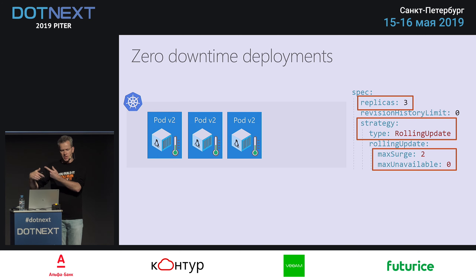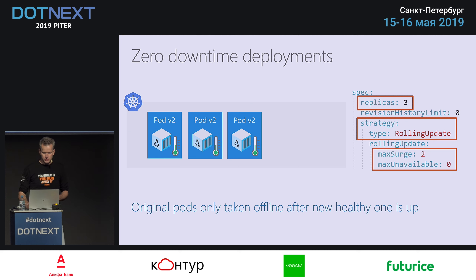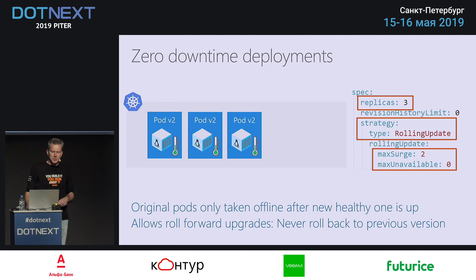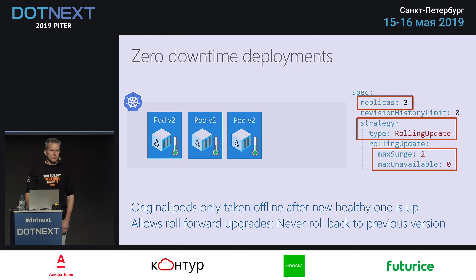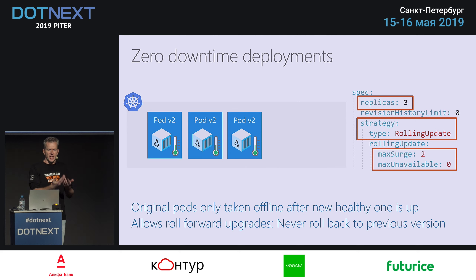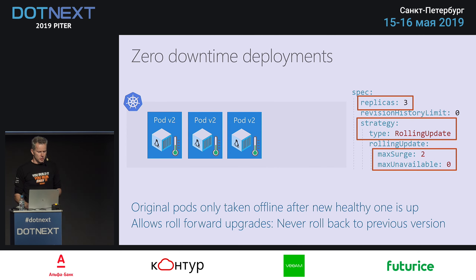The original pods are only taken offline after a new one is available. This also allows roll-forward updates. If a new version doesn't work and never becomes healthy, the V1 pods don't go away, so they remain reachable and you have zero downtime. You can just deploy a newer version, and if that one is good, it will start replacing and you're good to go again.